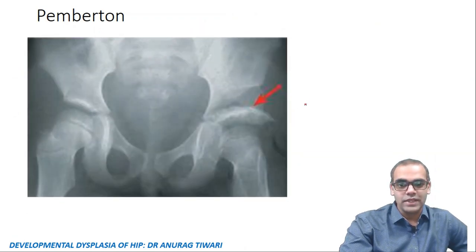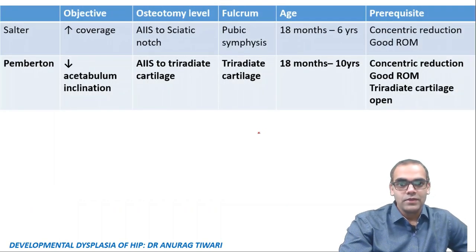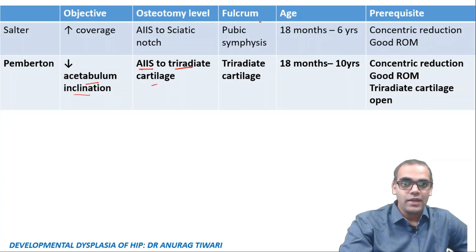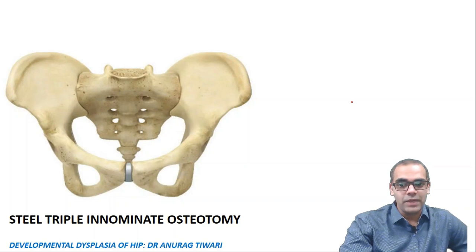Post-operatively after Pemberton osteotomy, the femoral head is well covered by bone. In summary, the main objective of Pemberton osteotomy is to decrease acetabular inclination. The osteotomy level is from AIIS to triradiate cartilage, fulcrum is the triradiate cartilage, which fuses at about 10 years — so this osteotomy cannot be done beyond 10 years.